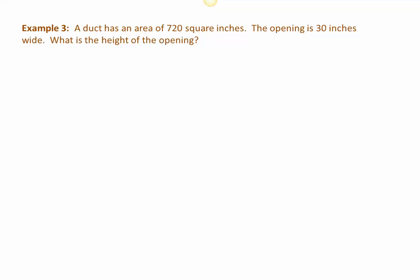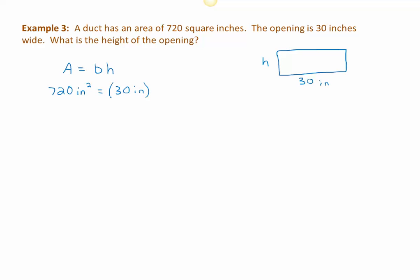Let's try another: we have a duct with an area of 720 square inches and an opening 30 inches wide; we'd like to find the height. The area of a rectangle is base times height, so: 720 in² = 30 inches × h. To solve for h, we undo the multiplication by dividing both sides by 30 inches. I'm going to keep the units in the problem to show you what happens with this division.